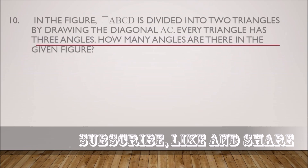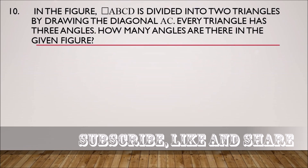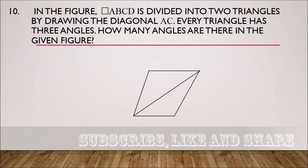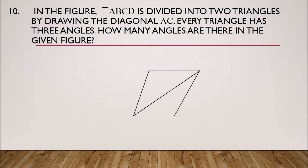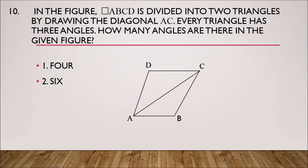Question number 10: In the figure, quadrilateral ABCD is divided into two triangles by drawing diagonal AC. Every triangle has three angles. How many angles are there in the given figure? Options: four angles, six angles, eight angles, ten angles.